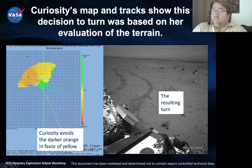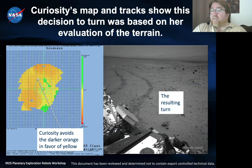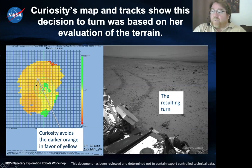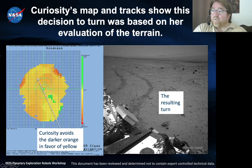This is an animation of the map built onboard as it was driving. It used stereo vision to process the terrain, assess the geometry, and determine where it's safe to drive. Green means absolutely safe, yellow is still safe but a little rockier, and red means not safe. All of this terrain was seen as safe enough to drive, but it still preferred to avoid the obstacles where it could.